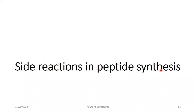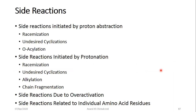Welcome students. Now we will learn about side reactions in peptide synthesis. What are these side reactions? These are the reactions occurring apart from the coupling reaction in peptide synthesis. There are various types of side reactions. Side reactions initiated by proton abstraction — these are of the types: racemization, undesired cyclization, and O-acylation.